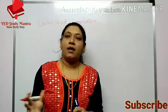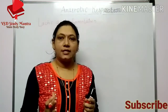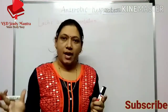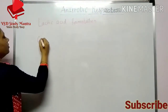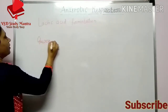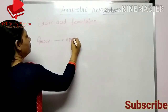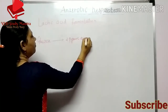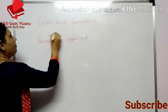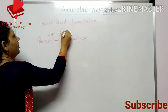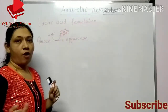Students, you know that in the aerobic process we have done glycolysis — that is, glucose is broken down and split into two pyruvic acid. Here also, glucose is split into two pyruvic acid. And here, 2 ATPs are formed.